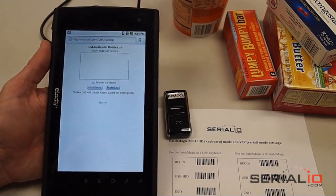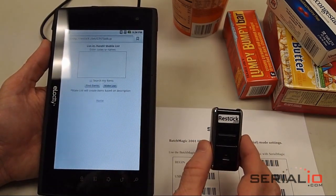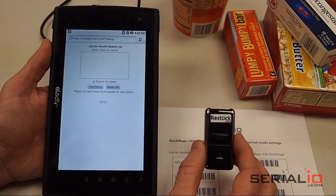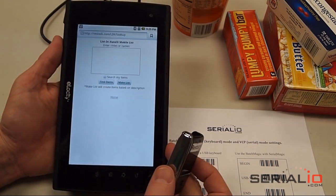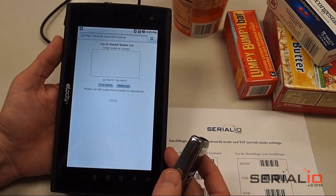In this video we're going to show you how to scan from a Batch Magic 2001 USB memory scanner into an Android Elocity A7 tablet.